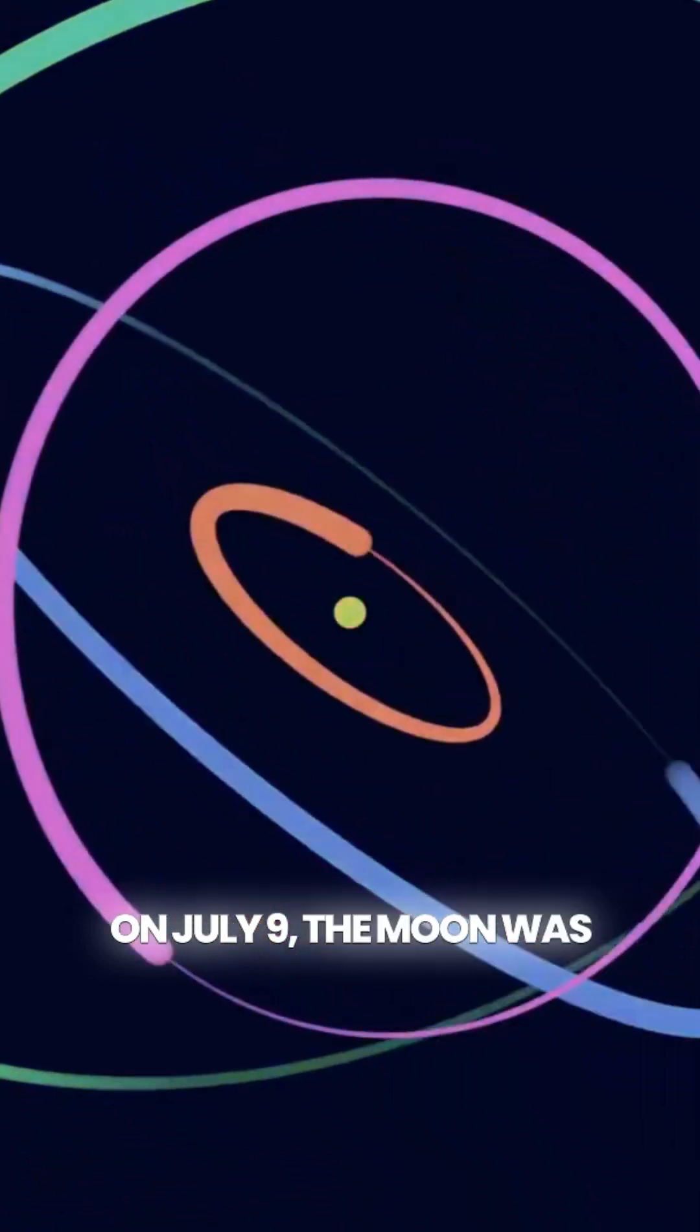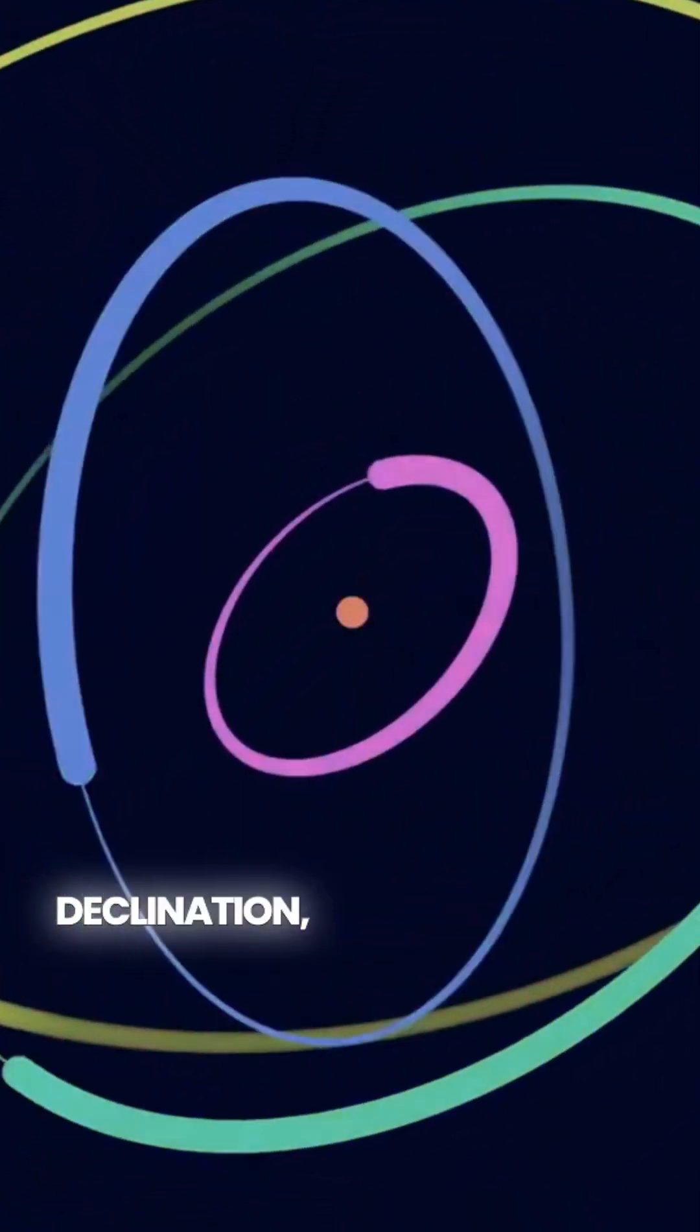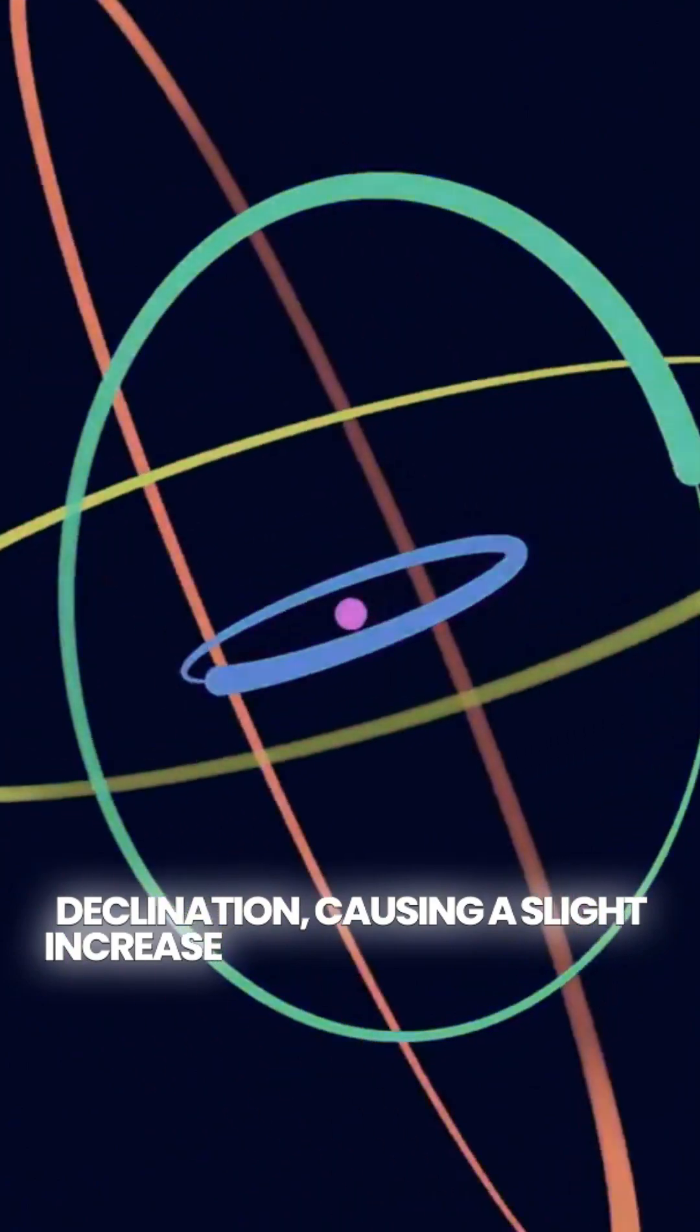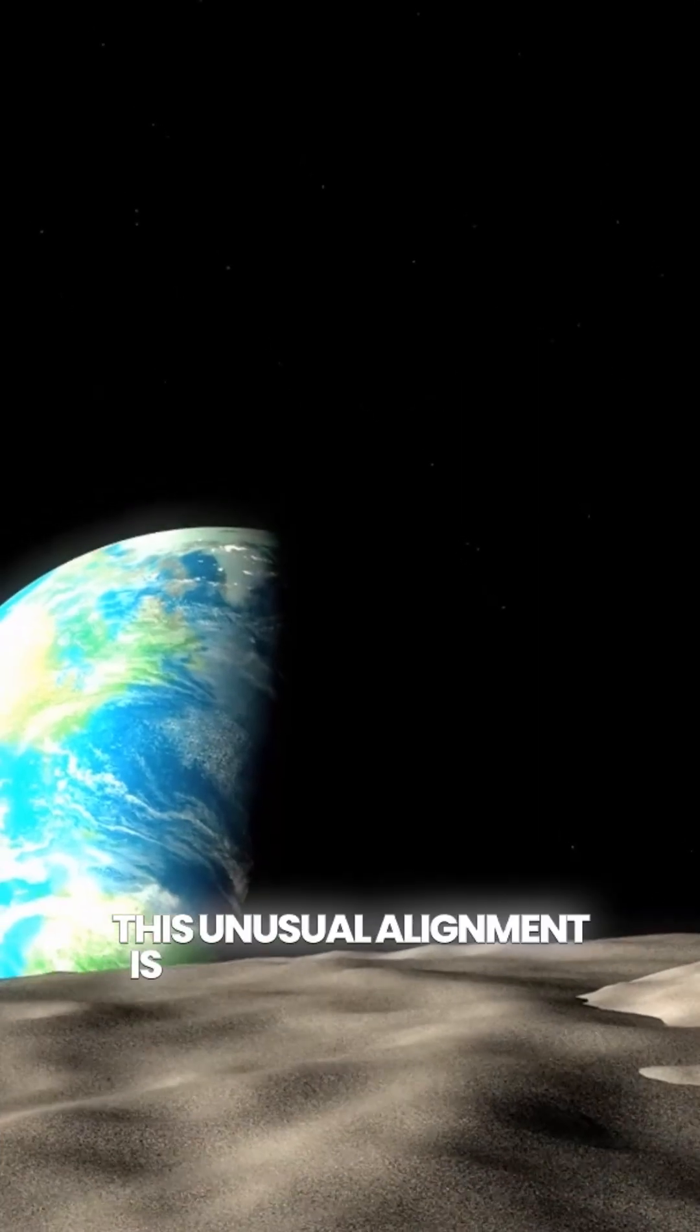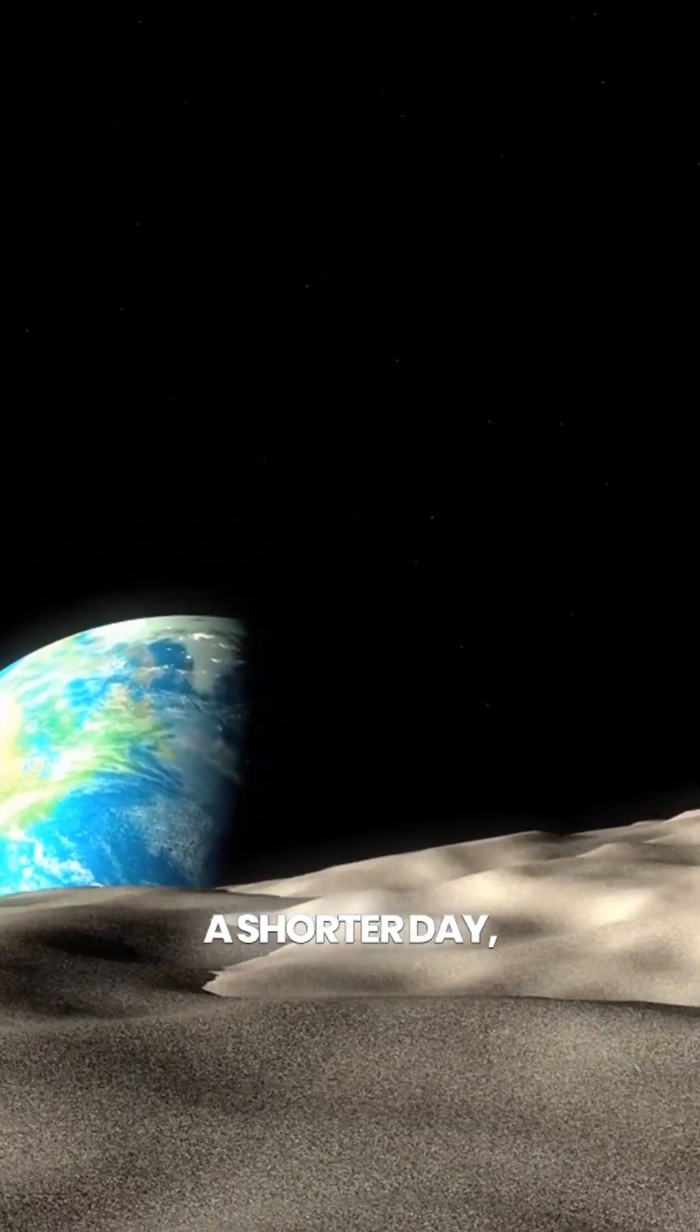On July 9th, the Moon was at its maximum declination, causing a slight increase in Earth's rotational speed. This unusual alignment is why we experienced a shorter day, and similar effects are expected on July 22nd and August 5th.